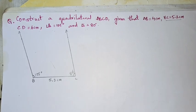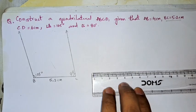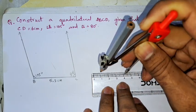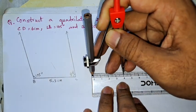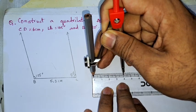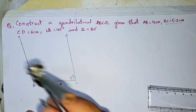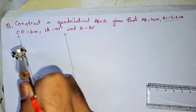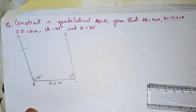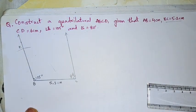A to B is 4 centimeter. We will take the radius 4 centimeter. So this is 4 centimeter. From B keep this needle and draw a ray, so this point is our A.